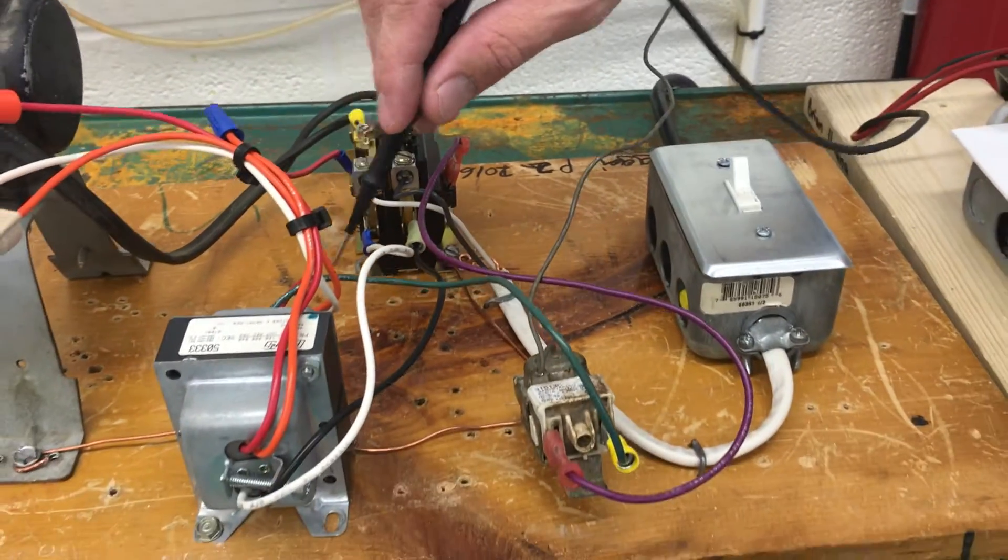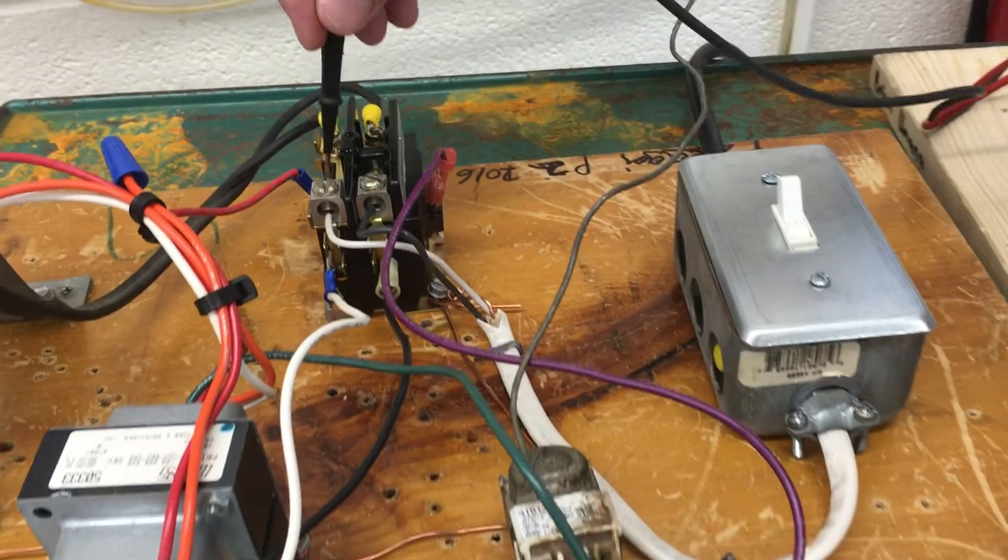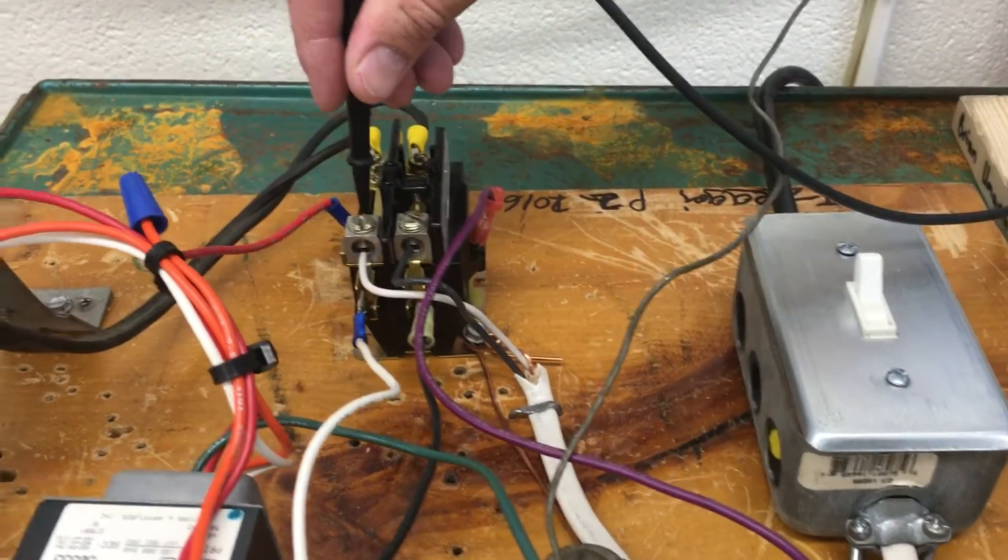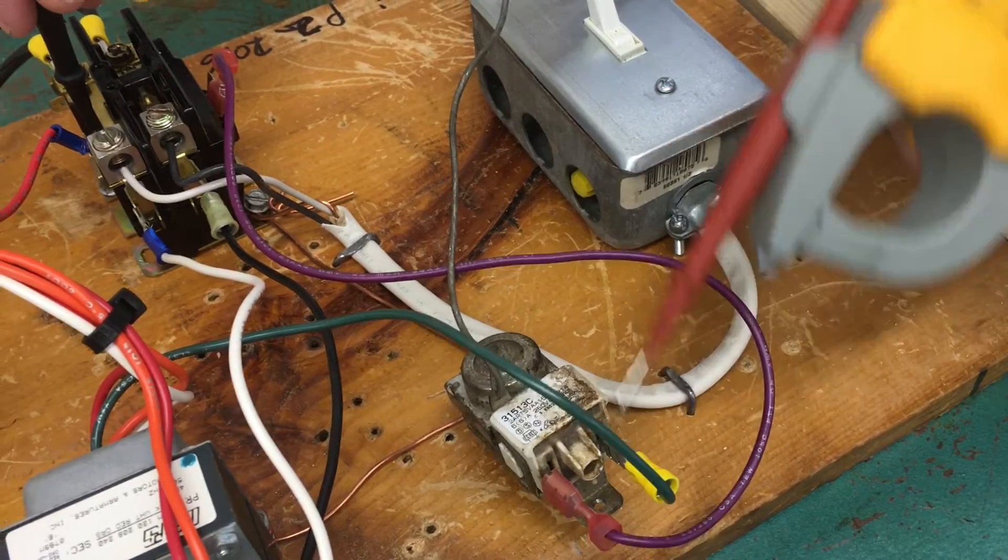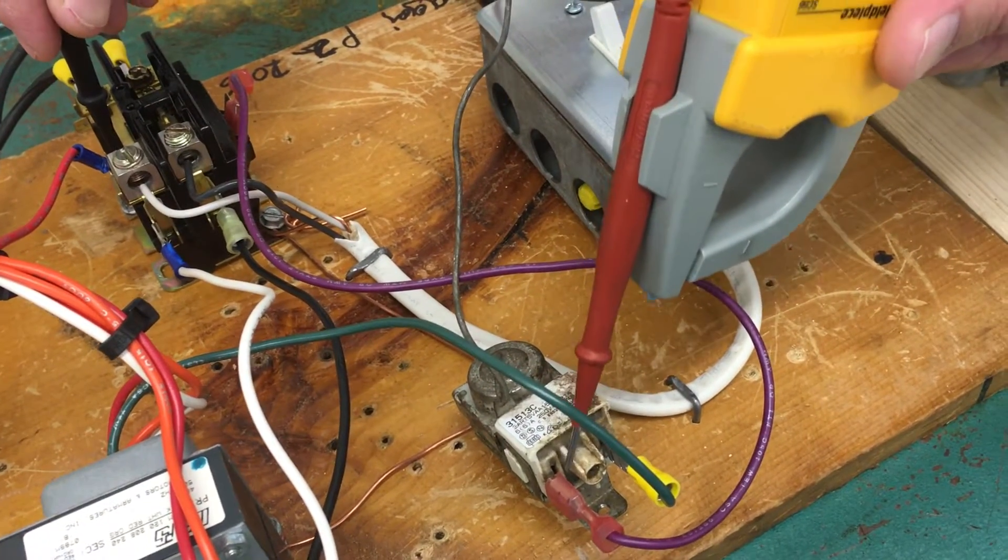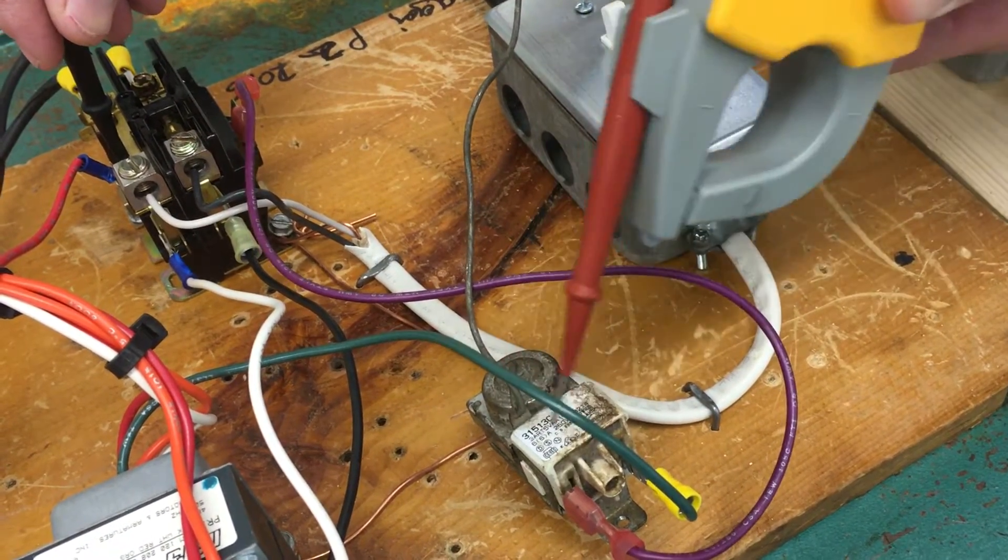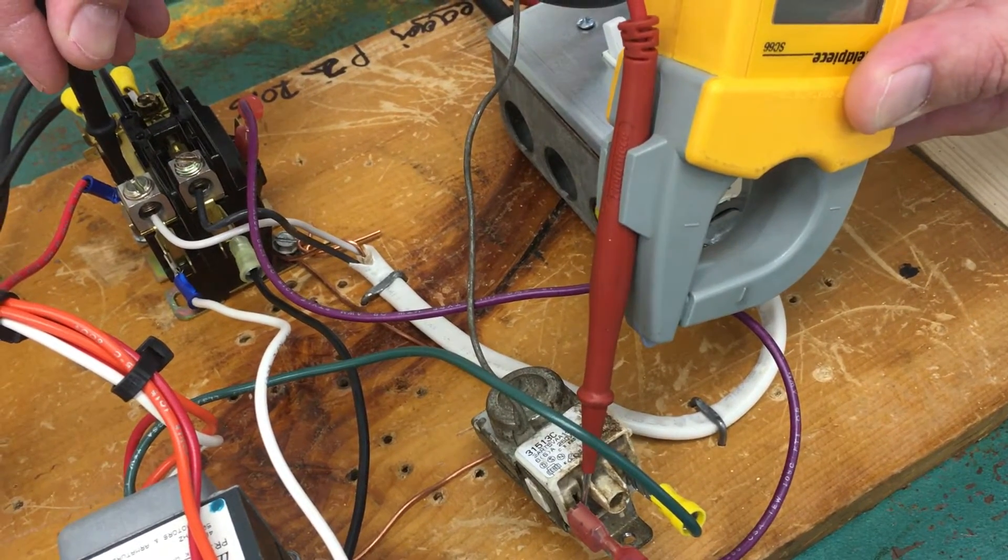I also want you to measure, so we have a common terminal coming back from the transformer over here on this side of the coil, and I want you to measure across the thermostat. Be careful right here that it doesn't touch any other metal or ground, and you're going to measure both sides across the thermostat.